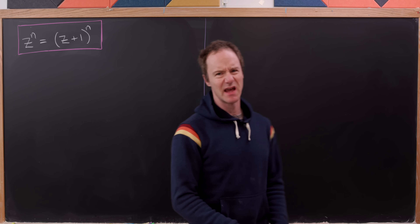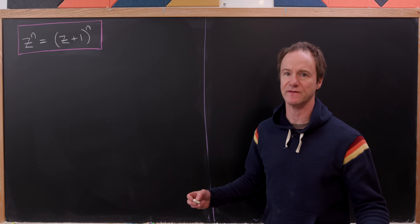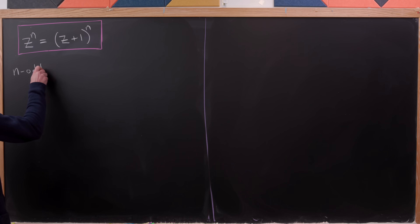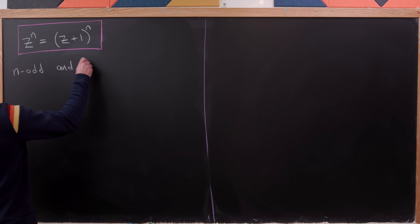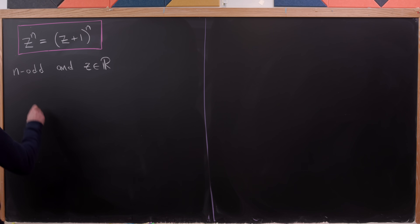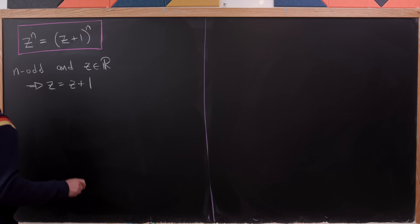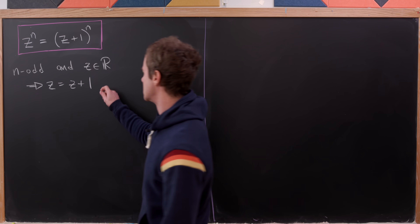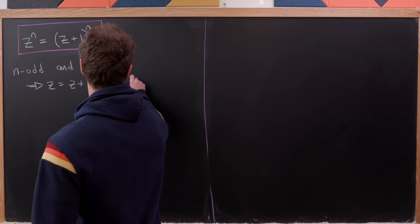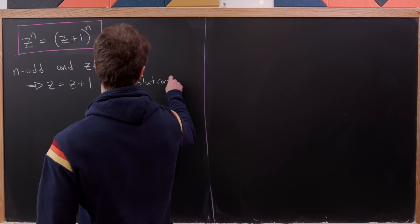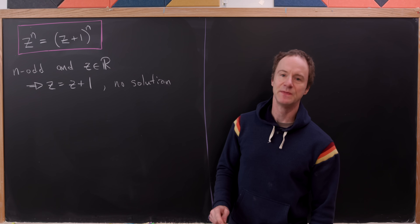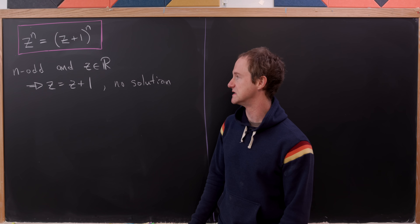You might say that doesn't seem to have solutions much of the time. If n is odd and we're considering real values of z, then z equals z plus one, because if n is odd we can simply take the nth root through to both sides. But z equals z plus one clearly has no solution — there's no number equal to one more than itself. That's equivalent to saying one equals zero.